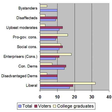Among the wealthiest and most educated group of conservatives, the enterprisers, 95 percent believed that most people can get ahead in life if they work hard. Despite having similar income and education levels, only 53 percent of liberals agreed while 39 percent disagreed. Even among the poorest groups — pro-government conservatives and disadvantaged Democrats — these differences are apparent: 74 percent of pro-government conservatives believed people can get ahead with hard work, while only 14 percent of disadvantaged Democrats agreed, with 79 percent disagreeing.